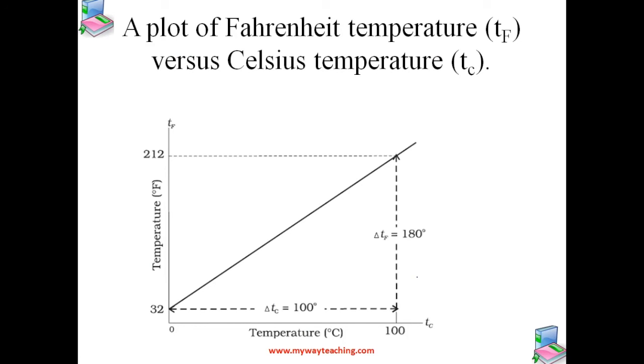A relationship for converting between the two scales may be obtained from the graph of Fahrenheit temperature versus Celsius temperature in the figure. Using this graph, we can obtain that equation. This is the plot of Fahrenheit temperature and the Celsius temperature. The relation that we get is temperature in Fahrenheit minus 32 divided by 180 equals temperature in Celsius divided by 100. Using this relation, we can convert Fahrenheit to Celsius and Celsius to Fahrenheit.